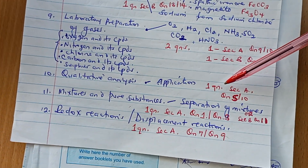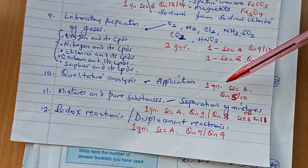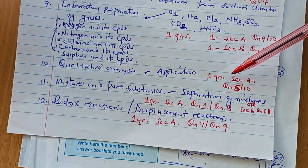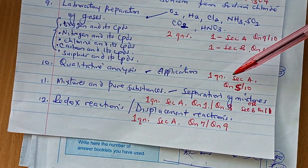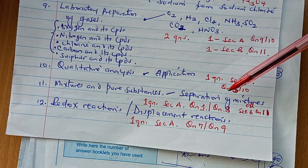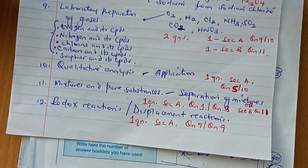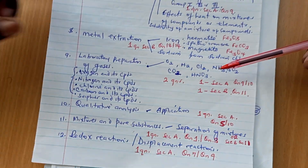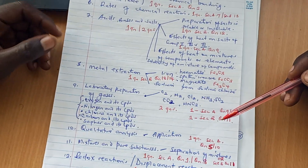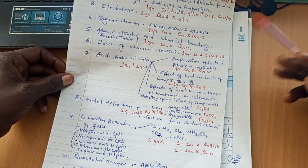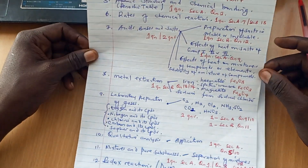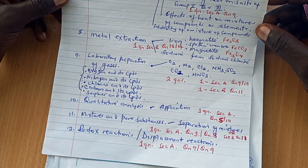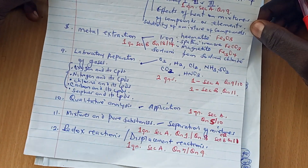Finally, there must always be a question on redox reactions — what you call oxidation-reduction reactions — or a question on displacement reactions. One question will always come in section A, that is question number 7 or question number 9. Generally, these are the key 12 topics you need to revise in detail to pass O-level paper 2 with very good scores. Please subscribe to our channel to be updated with current posts.